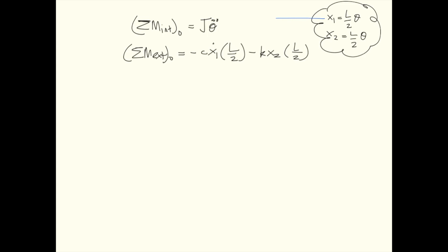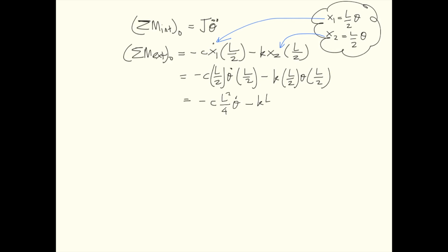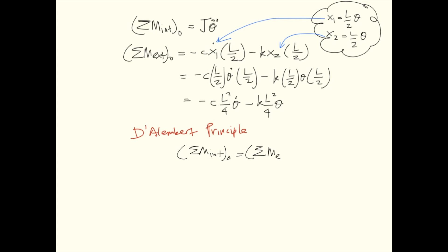Because we have found x1 and x2 in terms of theta, we can substitute them in. This gives minus C times (L/2) times theta-dot times (L/2), and minus K times (L/2) times theta times (L/2). According to D'Alembert's principle, the inertia moment at O equals the resultant external moments at O, so J theta double dot equals minus C L-squared over 4 theta-dot minus K L-squared over 4 theta. Bringing all terms to the left-hand side gives the final equation of motion of the system.